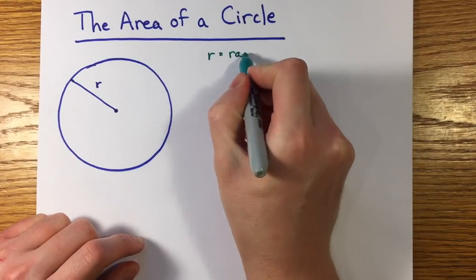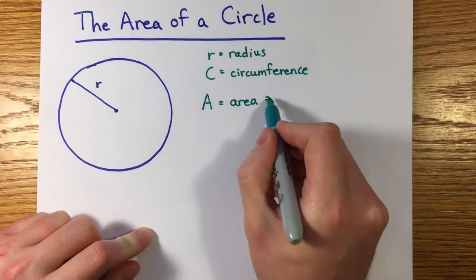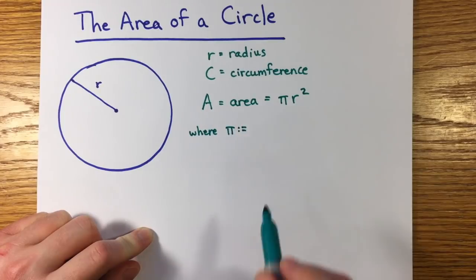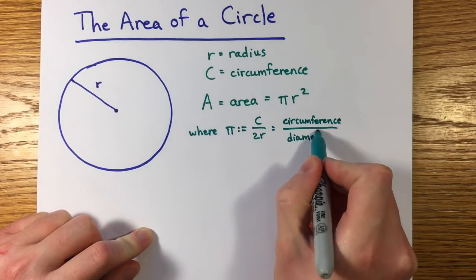is defined to be the common ratio of any circle circumference to its diameter, and so the area formula can also be stated A equals one-half cr.